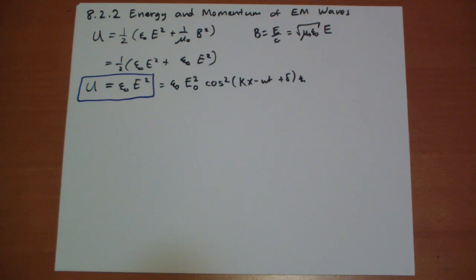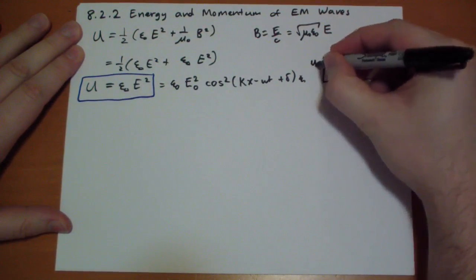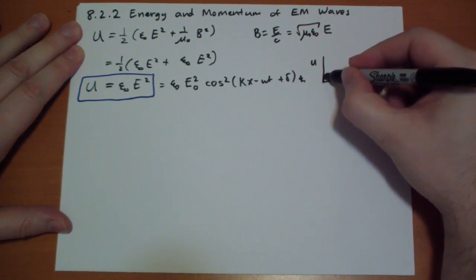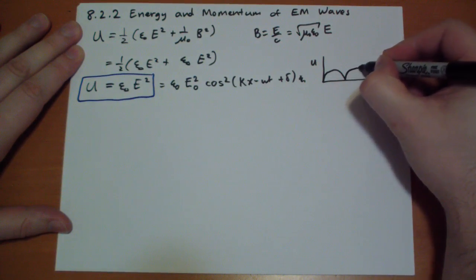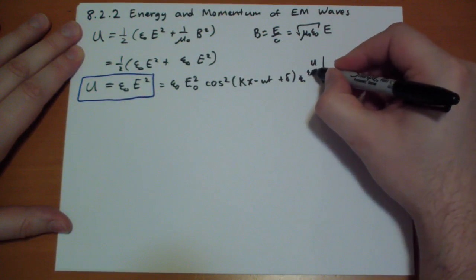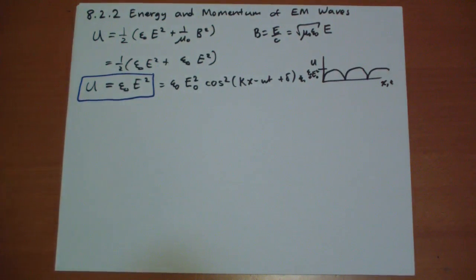What's next? Then we have... oh, I should probably draw a graph so you understand this better. u, x, t, whatever, so it's going to go, it kind of makes this weird. This is just epsilon E, epsilon-naught E squared, E-naught squared, whatever that is.